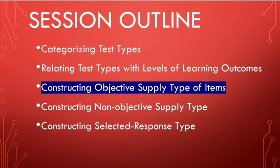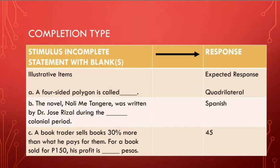On your screen you would see a table that illustrates a completion type of test. This is composed of a stimulus and a response — the stimulus is on the first column while the possible response is on the third column. This sample is otherwise known as gap filling; we have a blank they have to fill in, so it's a completion type of test.